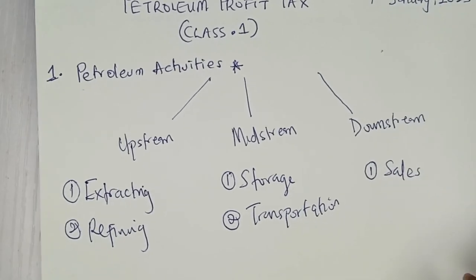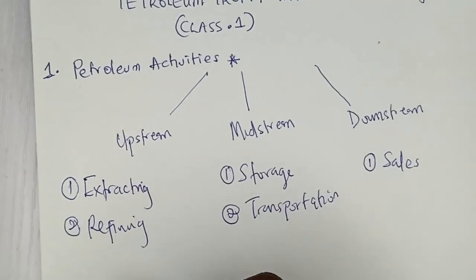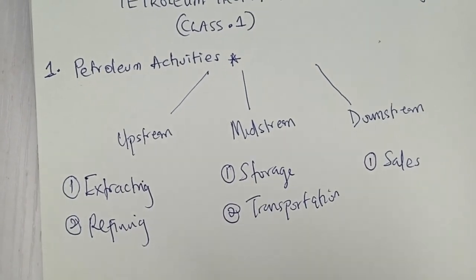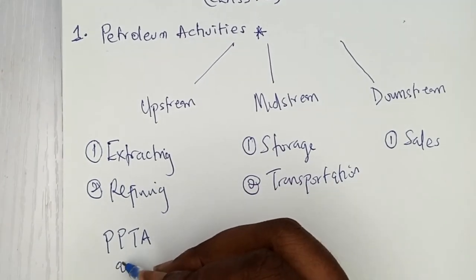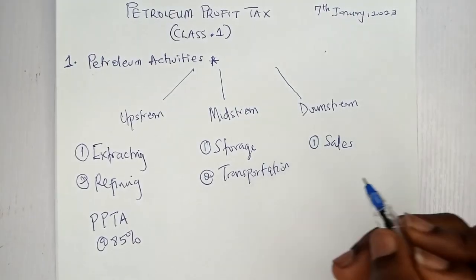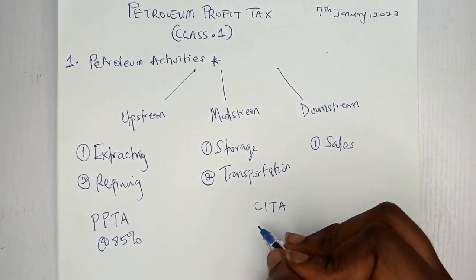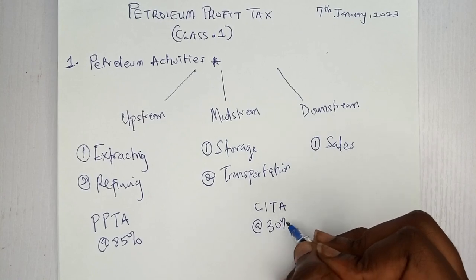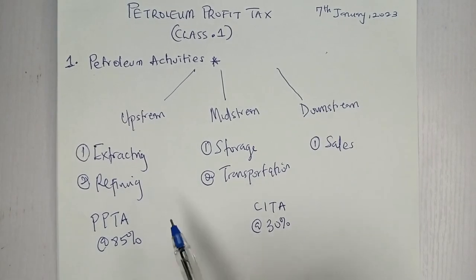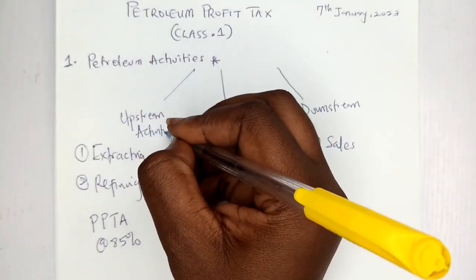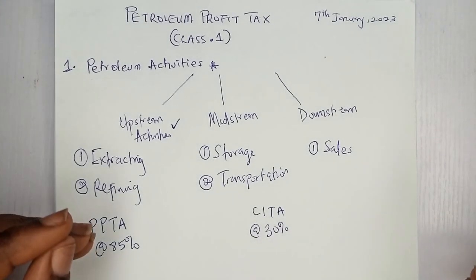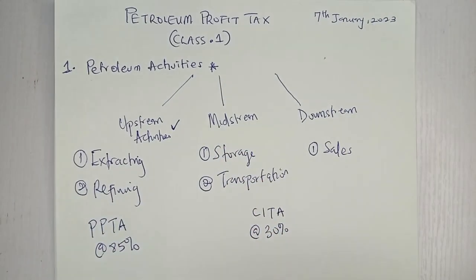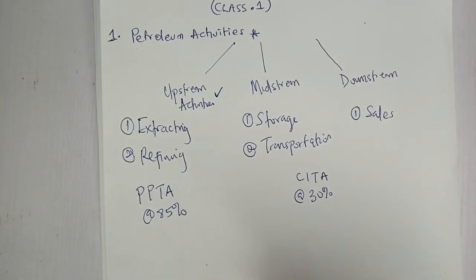You're selling chargeable oil and related products under Downstream. The Upstream Activities are what the Petroleum Profit Tax Act actually focuses on, taxed under PPTA at 85%. The Midstream and Downstream are taxed under the Companies Income Tax Act at 30% or less. So when a question gives you income from midstream or downstream, you exclude it from PPTA at 85% and tax it at 30% instead.